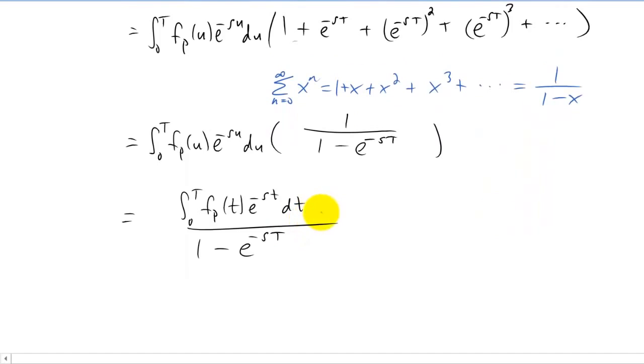Now as far as using this formula goes to find the Laplace transform of a periodic function, capital T is a known value. It's just a constant. So you're going to plug whatever your period is in for capital T. And you're just going to do this integral on the first part of the periodic function from 0 to the period.